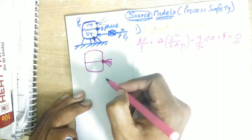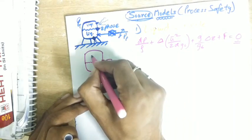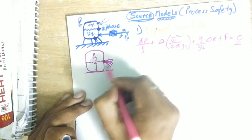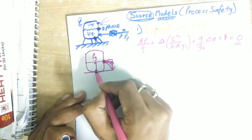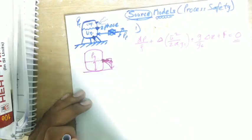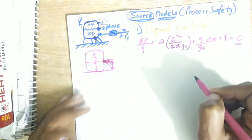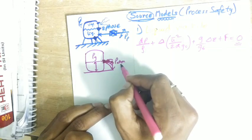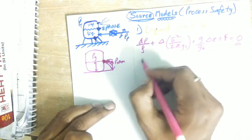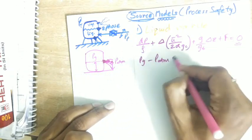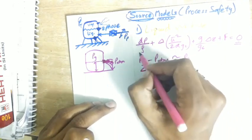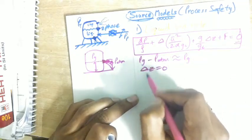What we assume: there is some gauge pressure Pg here. Δz would be zero because both are at the same height - the release is at same height. dP would be Pg minus P atmospheric. Let's consider Pg to be very much greater than P atmospheric, so Pg - P atmospheric ≈ Pg. Δz = 0. These are the assumptions for liquid through a hole.